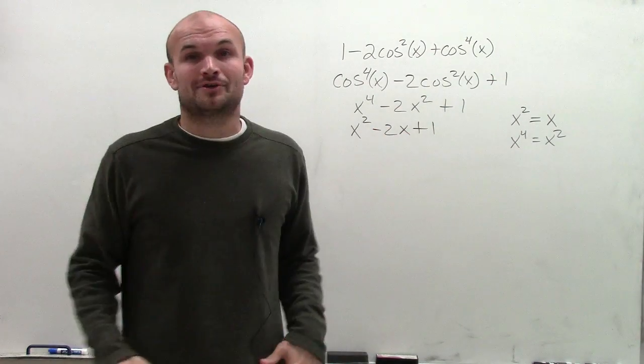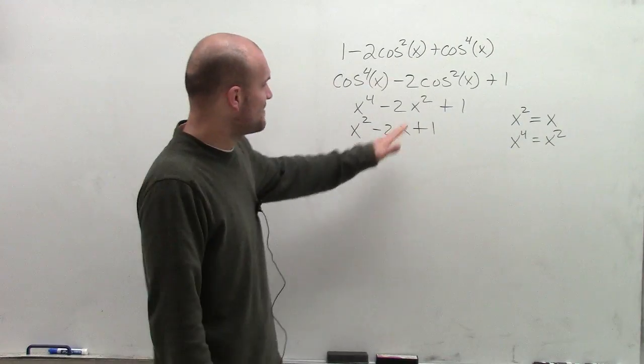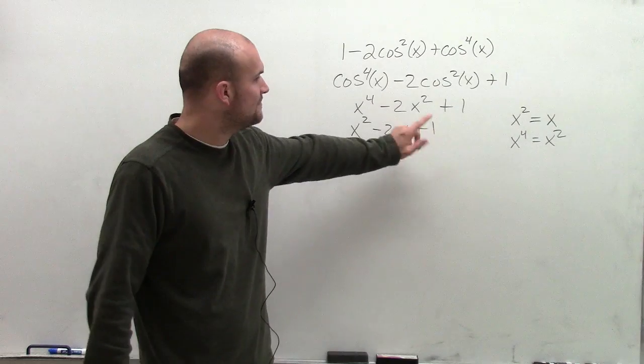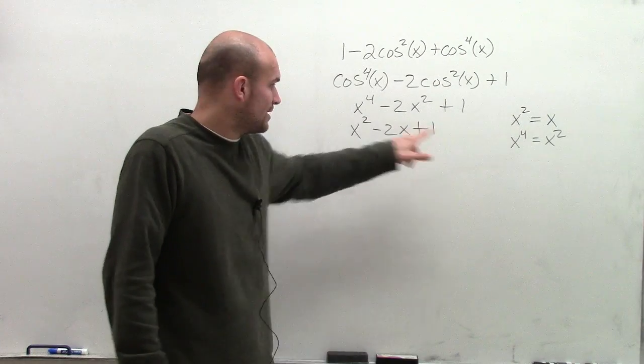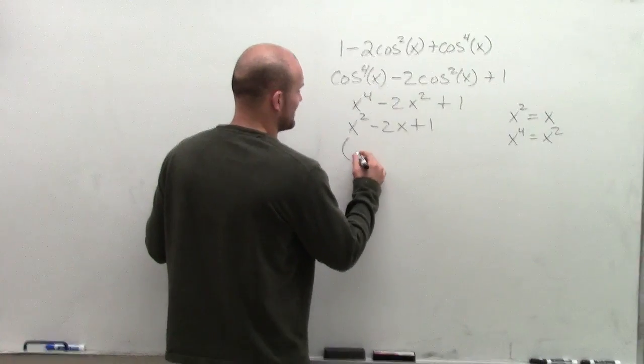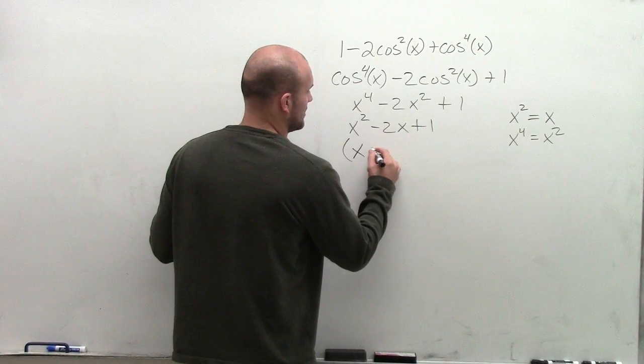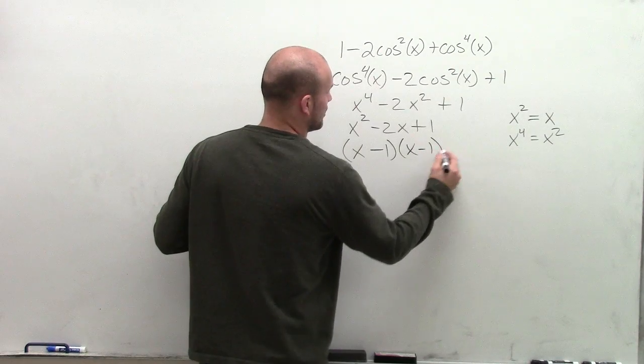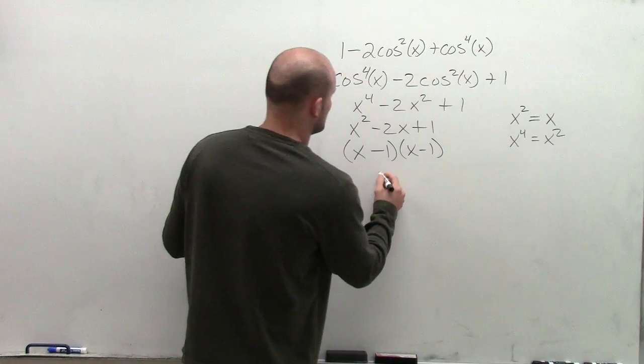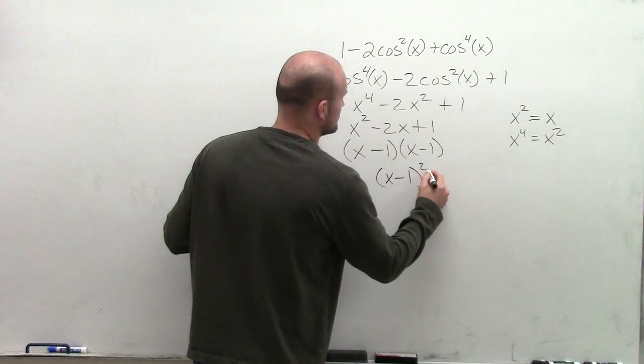Now, ladies and gentlemen, this is the simplest I can get to help you factor. So by factoring this, what two numbers multiply to give you 1, but then add to give you negative 2? You can rewrite your factors as x minus 1 times x minus 1, which we can rewrite as x minus 1 squared.